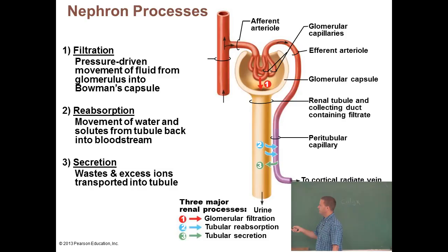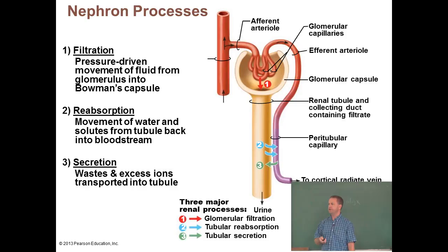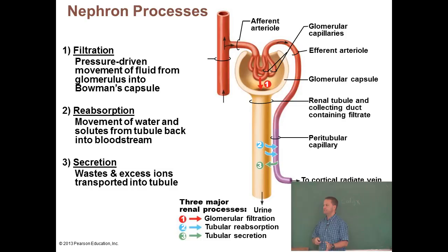Reabsorption is the movement of stuff from the tubule back into the bloodstream. In dogs, around 45 to 50 mls of filtrate are created every minute. At 50 mls per minute, that's 3,000 milliliters — three liters per hour. So potentially a dog could be producing three liters of urine per hour if it wasn't reabsorbing anything. A lot of what is initially filtered actually gets reabsorbed back into the bloodstream.